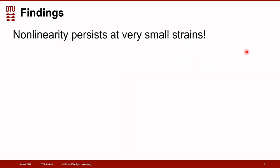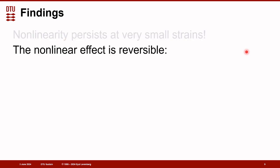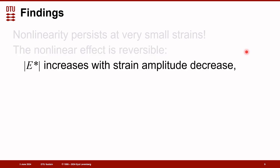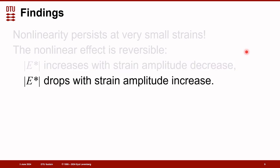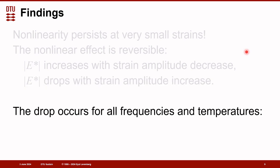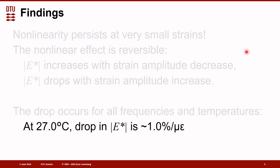Basically the findings are that the nonlinearity persists at very small strains. The nonlinear effect is reversible, meaning that E star, the norm of the complex modulus, increases with strain amplitude decrease and also drops with strain amplitude increase. The drop occurs for all frequencies and temperatures.